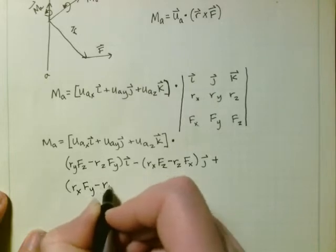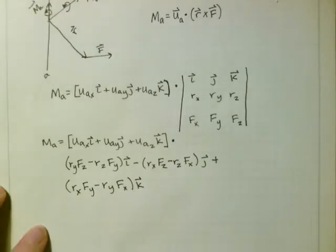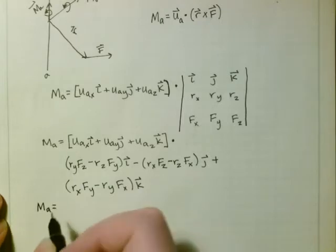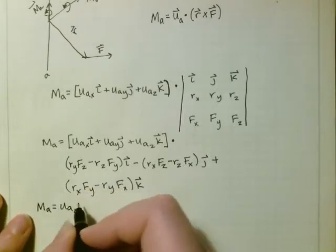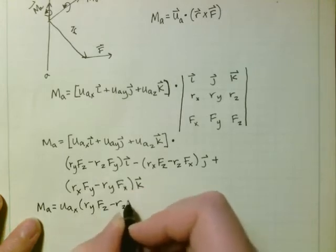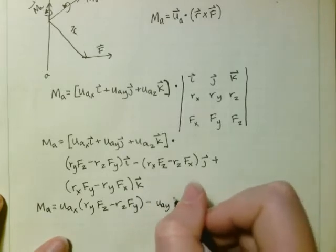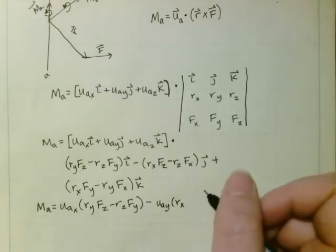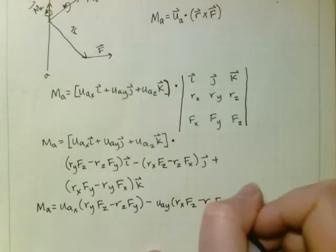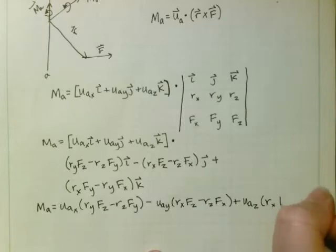in the j direction, plus (r_x f_y minus r_y f_x) in the k direction. So now we do the dot product. You're going to get u_ax times (r_y f_z minus r_z f_y) minus u_ay (r_x f_z minus r_z f_x) plus u_az (r_x f_y minus r_y f_x).